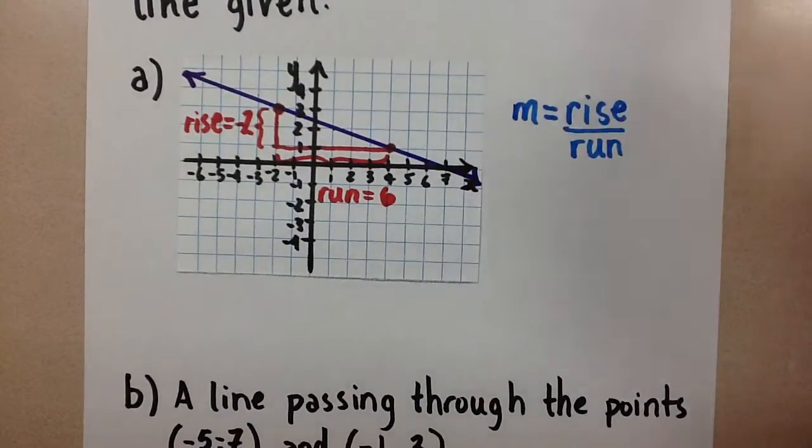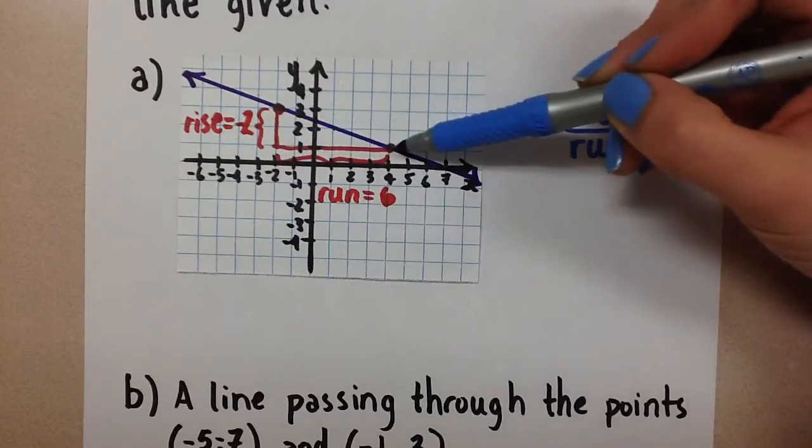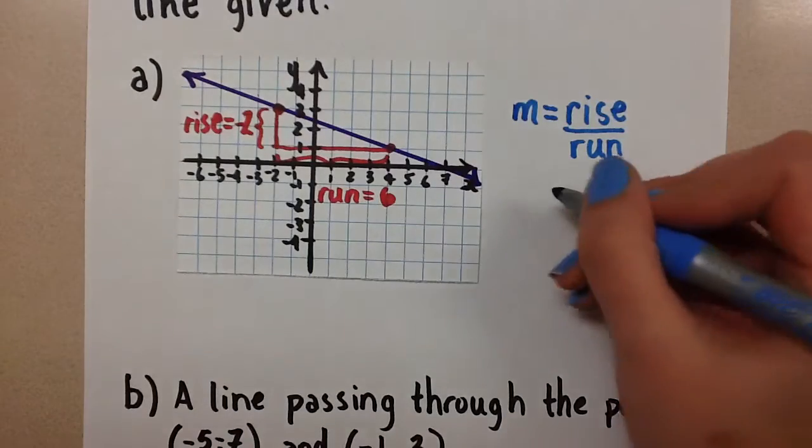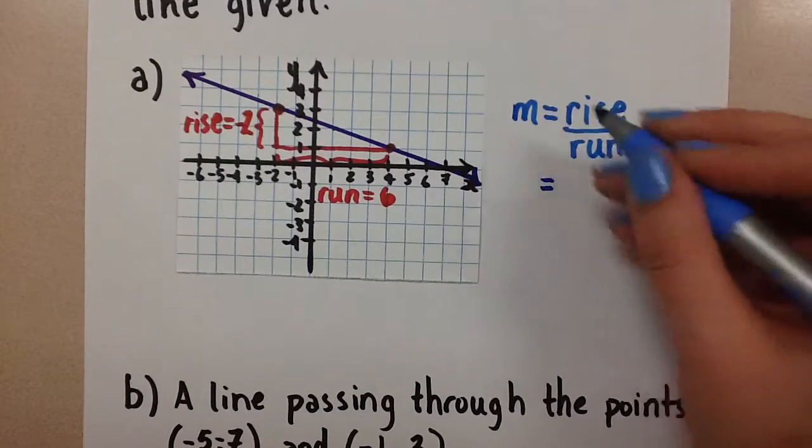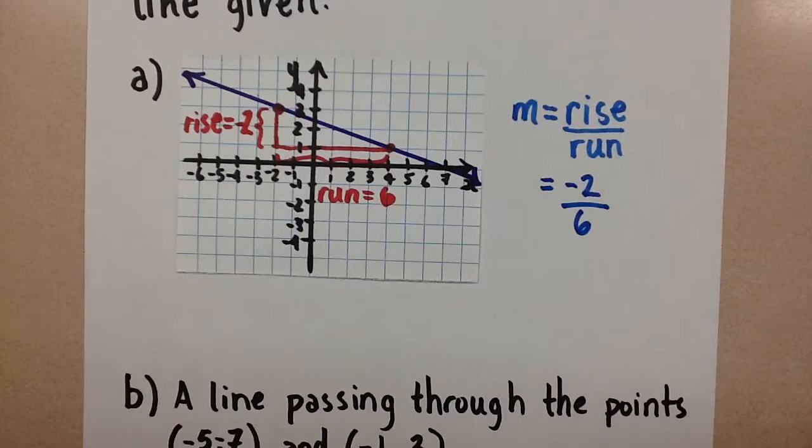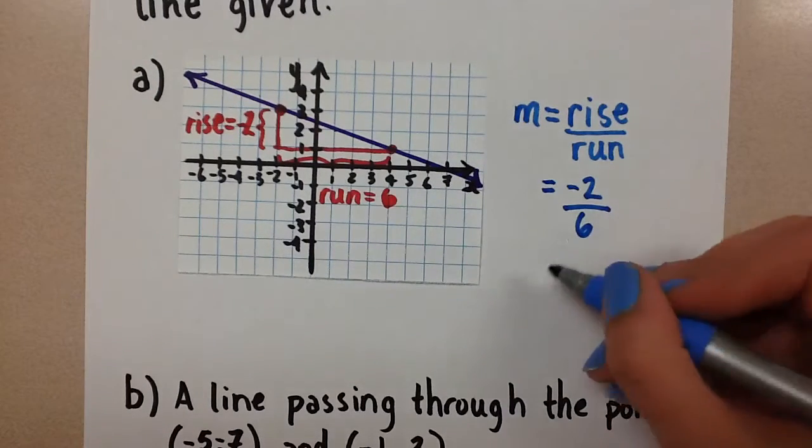Okay, so again the line is going down and then to the right. So that gives us that negative rise and a positive run. Fill in those values. The rise then is negative 2 and the run was 6. So there's our slope, but that's not a reduced fraction.